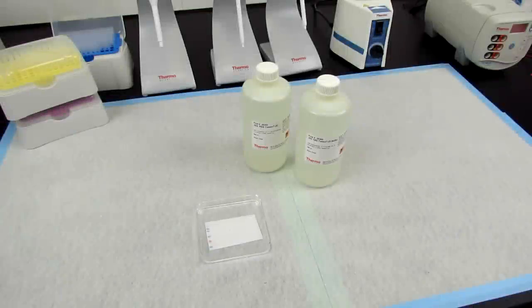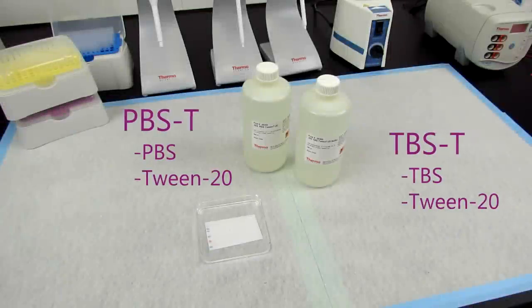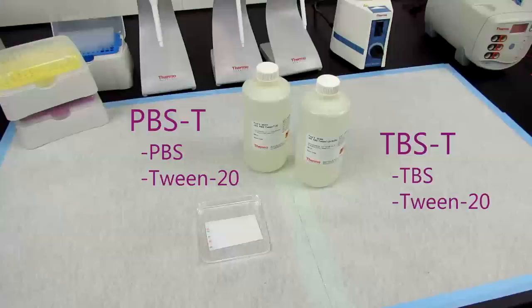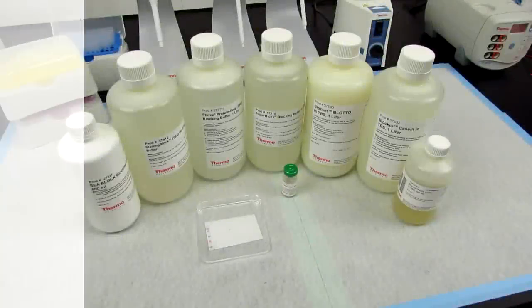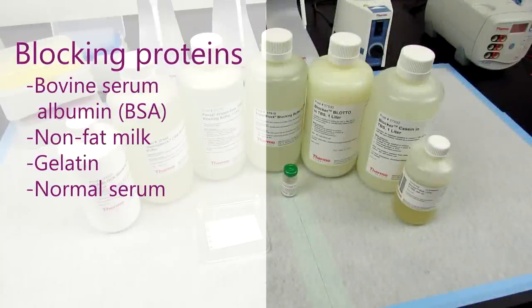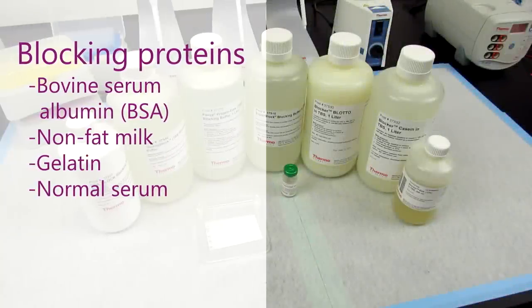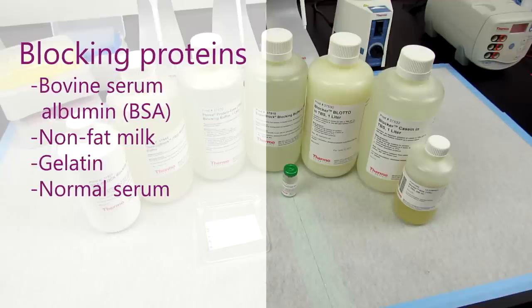The membrane is blocked with a buffer that is often comprised of tris or phosphate-buffered saline with tween-20 detergent and up to 5% of a non-reactive protein, such as bovine serum albumin, non-fat milk, gelatin, or normal serum.